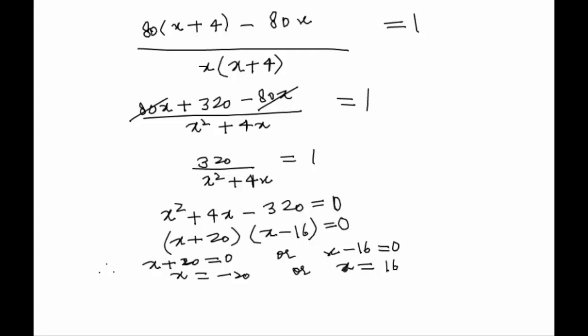As we know that the x which we had let was equal to the number of books, and number of books can never be negative, so we reject this value. And this would be the solution to our problem: 16 books he had bought for rupees 80. You can write the reason in the brackets: number of books can never be negative.